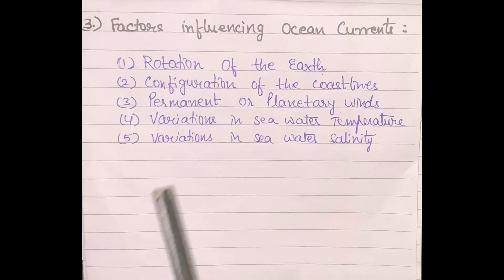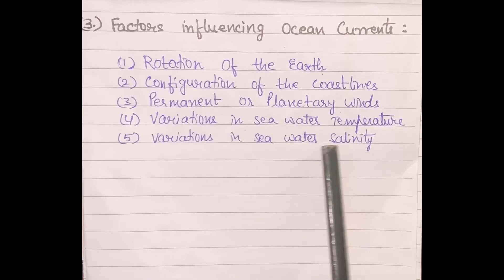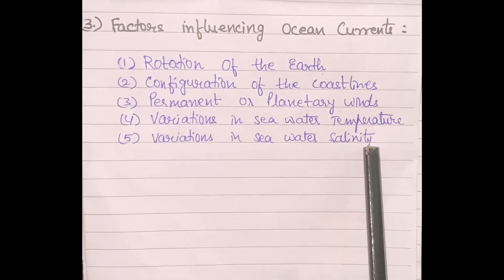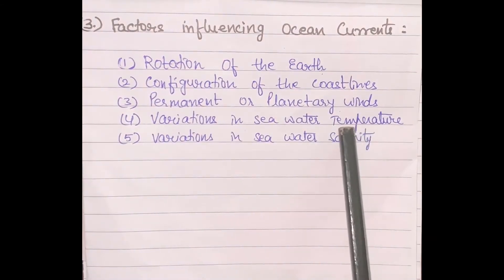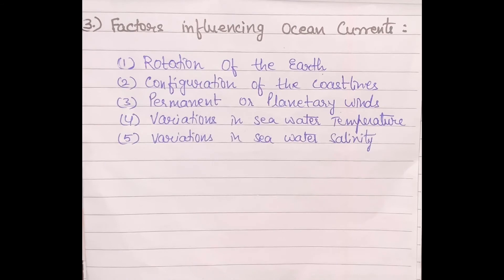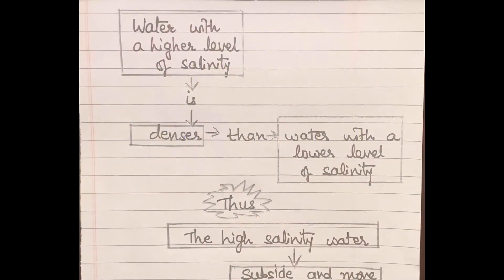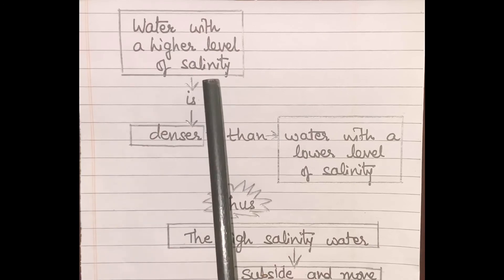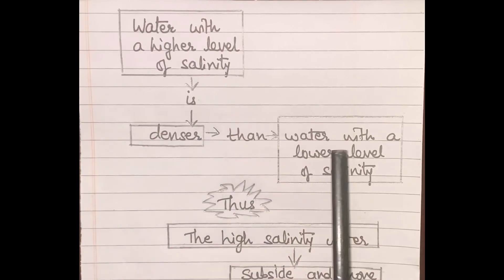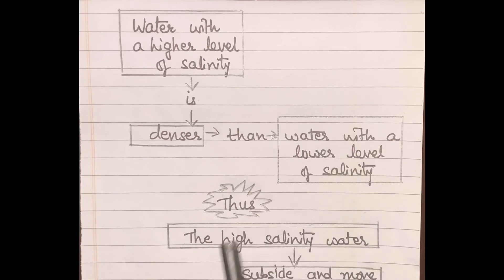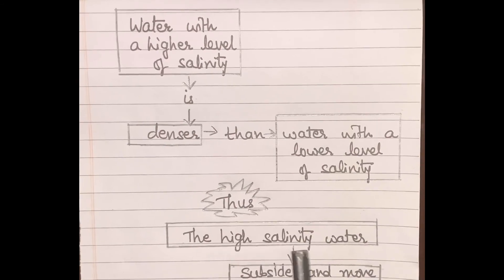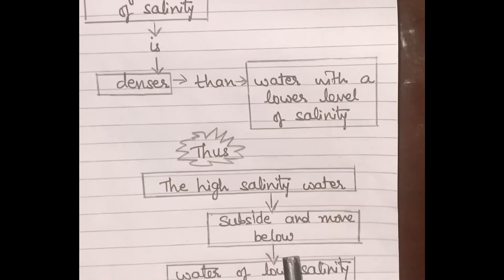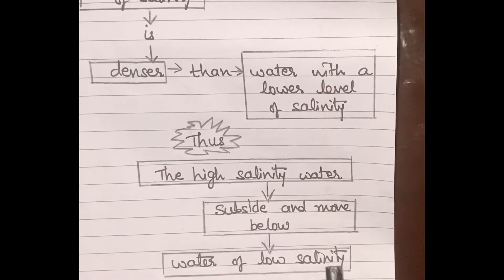The fifth factor is variations in seawater salinity. Salinity means the amount of salt contained in the water. Water with a higher level of salinity is denser than water with a lower level of salinity. Because of this, higher salinity water tends to subside and move below the water of low salinity.